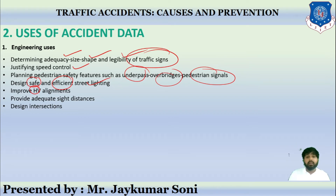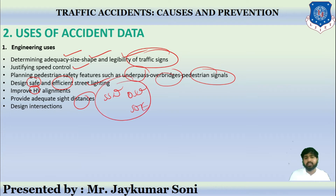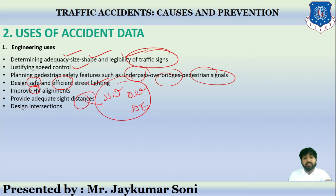Adequate sight distances — in the form of stopping sight distance, overtaking sight distance, and intersection sight distance — should be provided. The design of intersections must also be improved where the situation demands. These are the engineering uses of accident data.